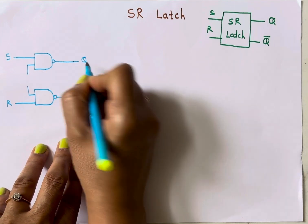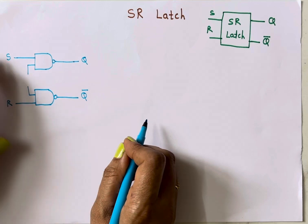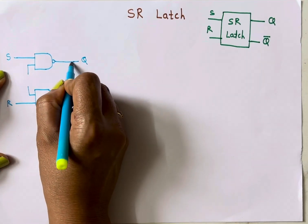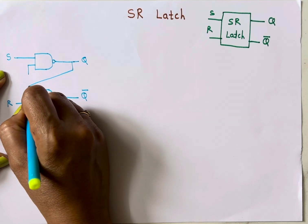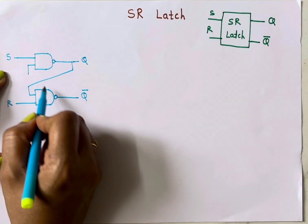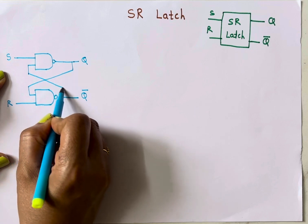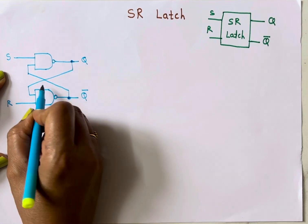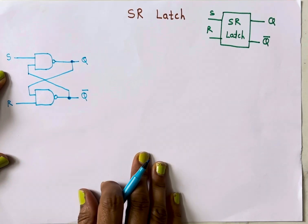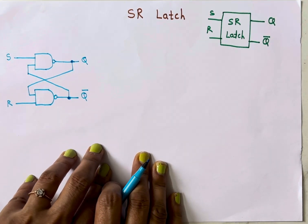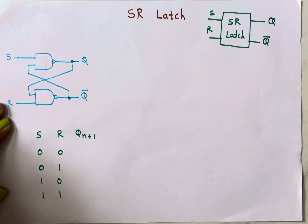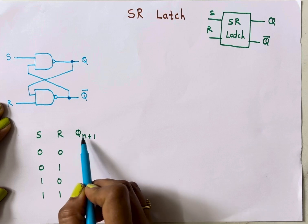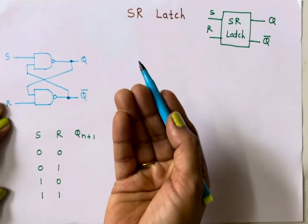We can design an SR latch using two NAND gates. The two inputs are S and R, and the two outputs are Q and Q-bar. The second input to each NAND gate is Q and Q-bar respectively. Now let's verify the truth table of the SR latch.